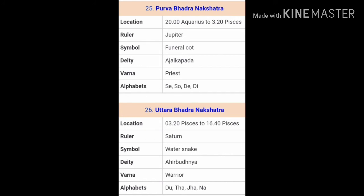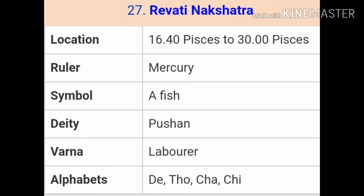Purvabhadra Nakshatra falls in the signs of Kumbha as well as Meen, and is ruled over by Jupiter. This Nakshatra represents spiritual people, priests and gurus. These people are hardworking but crave material enjoyment, and despite being spiritual, they get entangled in the material world. The next Nakshatra is Uttar Bhadrapada, ruled over by Shani. These people are very hardworking, suffer a lot of troubles but overcome them easily. The 27th and last Nakshatra is Revati, ruled over by Mercury — its symbol is a fish. These people are very caring, loving and good-hearted, make good friends, and Revati Nakshatra is one of the Shreshtha Nakshatras.